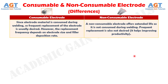Number 6: Since electrode material is consumed during welding, frequent replacement of the consumable electrode is usually desired. However, the replacement frequency depends on electrode size and filler deposition rate, whereas a non-consumable electrode offers extended life as it is not consumed during welding. Frequent replacement is also not desired.